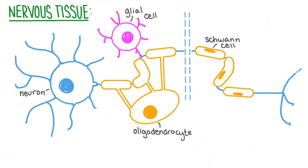Nervous tissue contains neurons, which are specialized in communication, as well as various types of support cells. There are glial cells which carry out functions such as providing nutrients for neurons. There are also cells called oligodendrocytes, which provide the myelin sheath for neurons within the central nervous system. These various types of cells work together to allow nervous tissue to carry out its function.